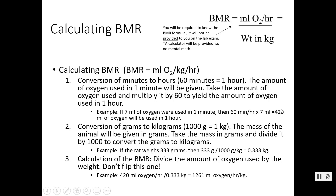Now with our two converted numbers — 420 milliliters of oxygen per hour and 0.333 kilograms — we divide: 420 divided by 0.333 gives 1,261 milliliters of oxygen per hour per kilogram. That's your BMR. Don't worry, we're going to do some more practice.